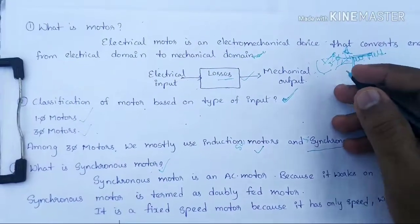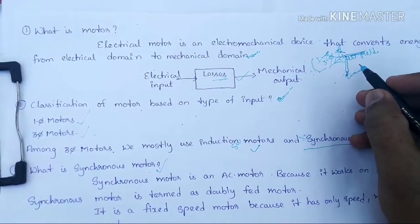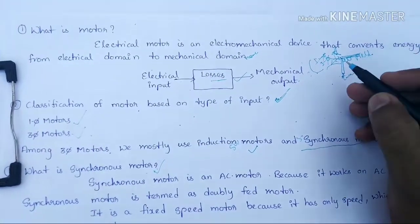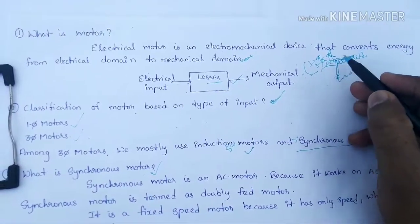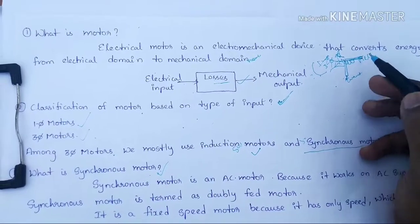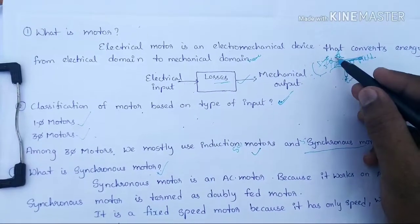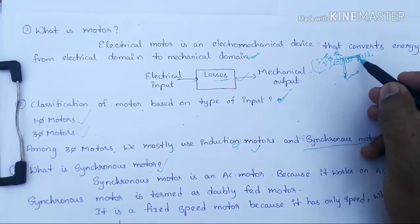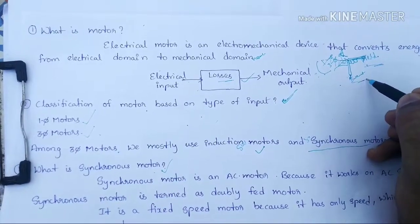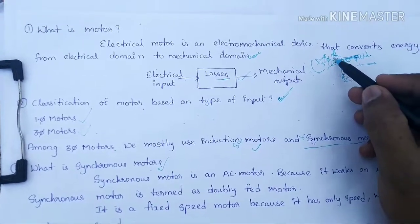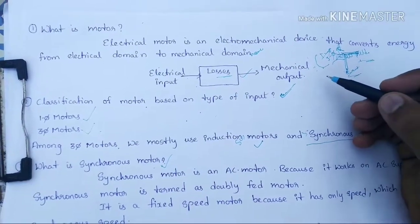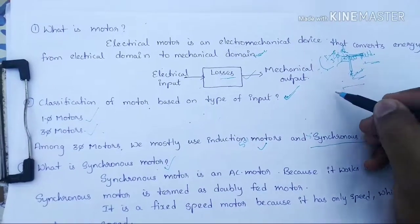Fleming's Left Hand Rule: using your left hand, the index finger represents the magnetic field direction, the middle finger represents the current direction, and the thumb represents the direction of rotation or force. I am going to draw a rough diagram to illustrate this.